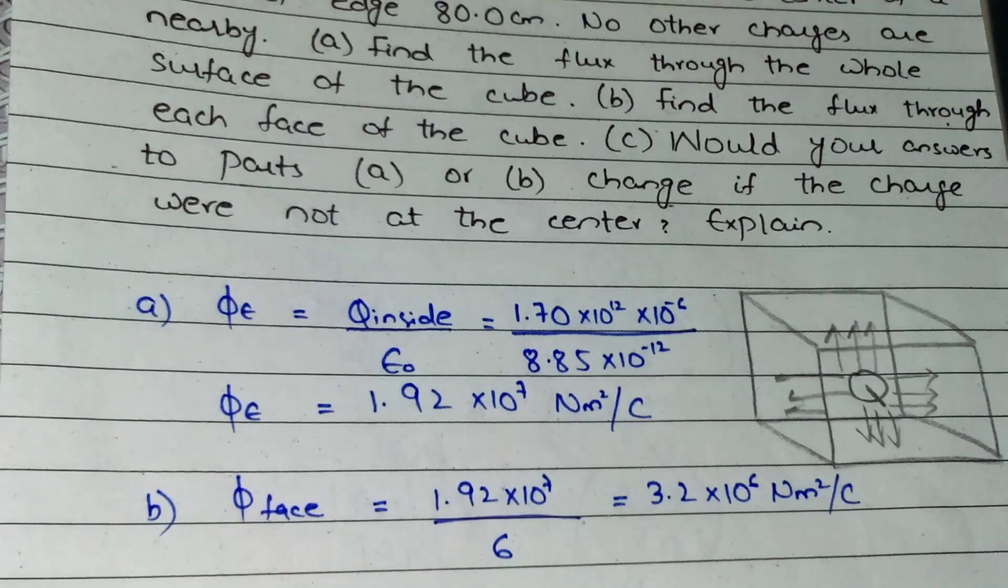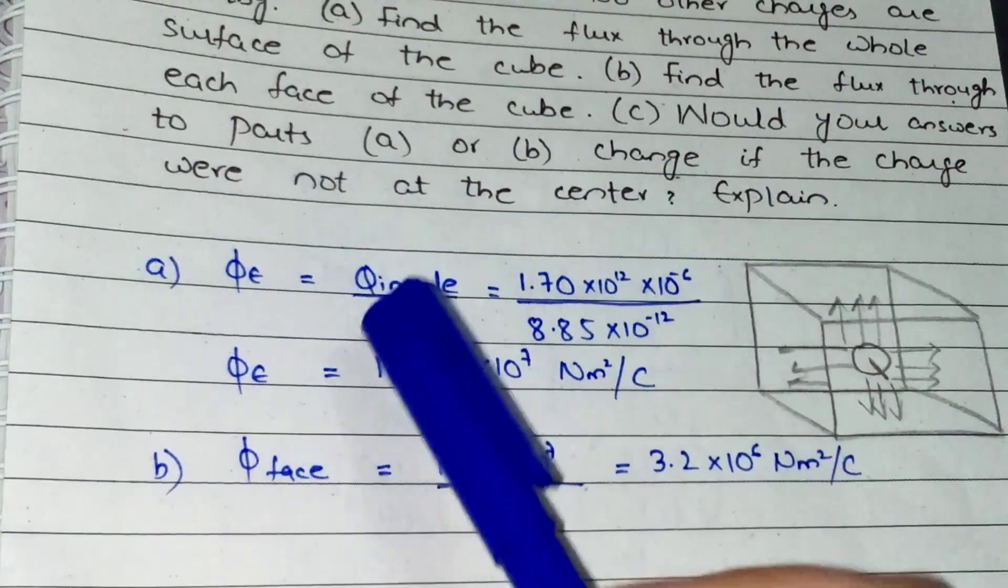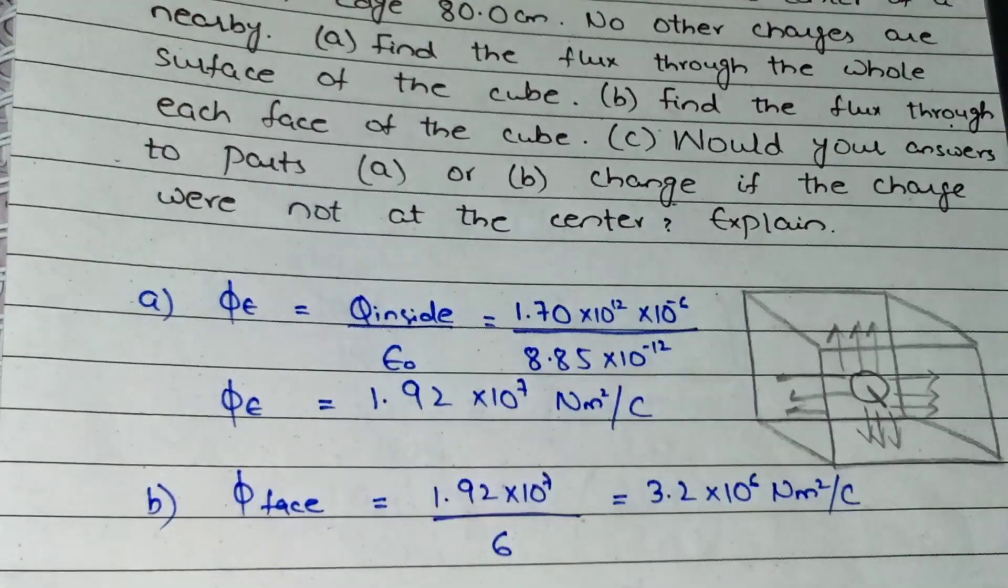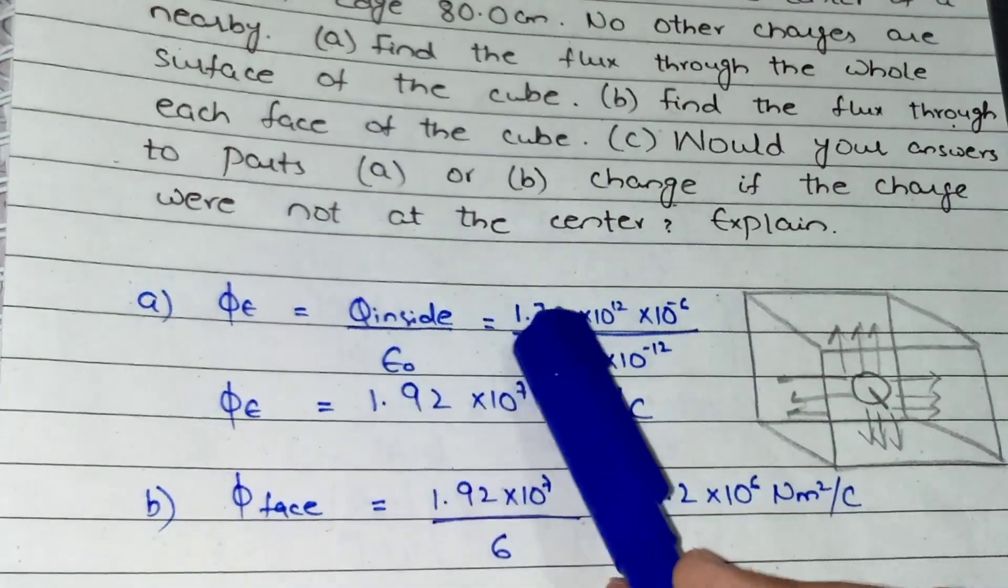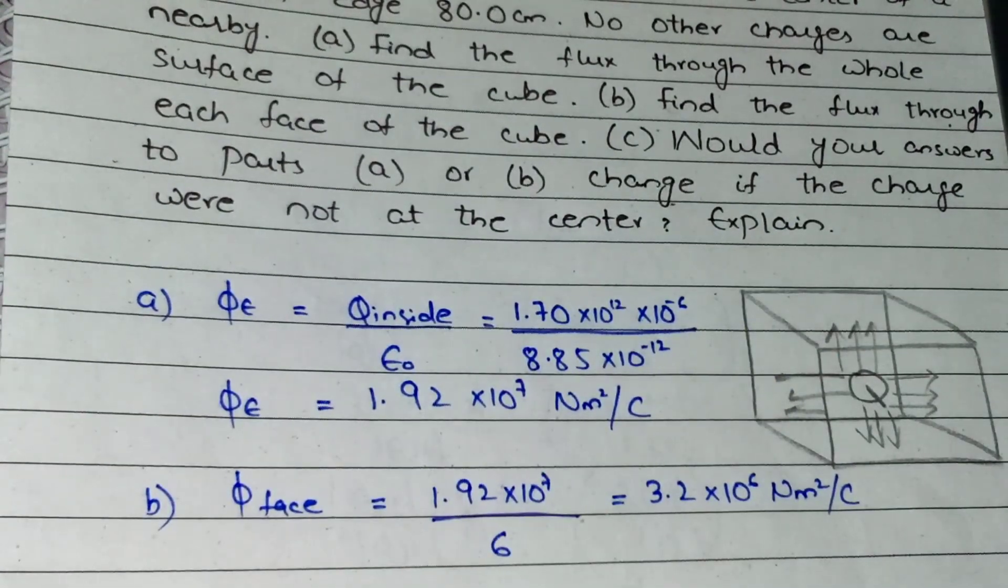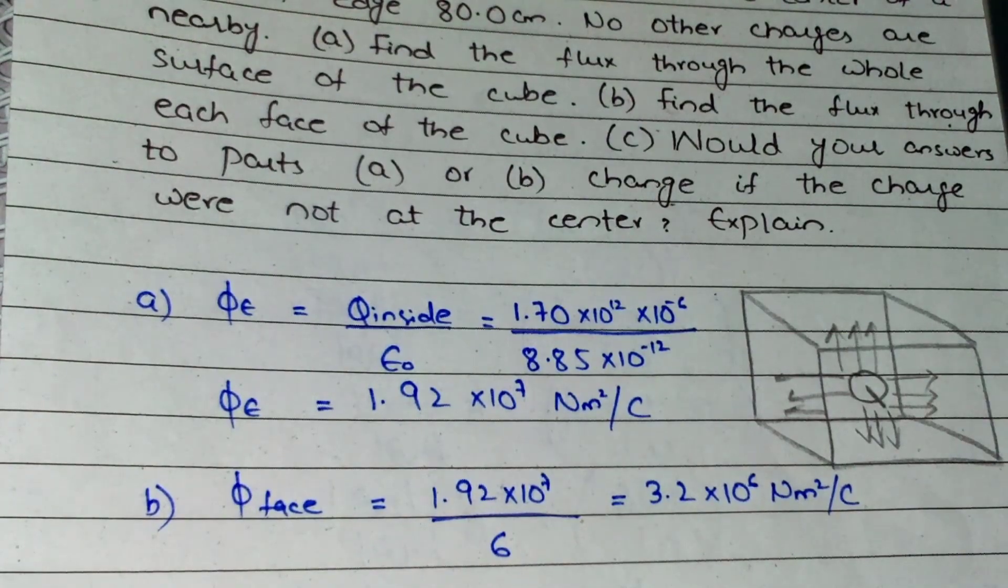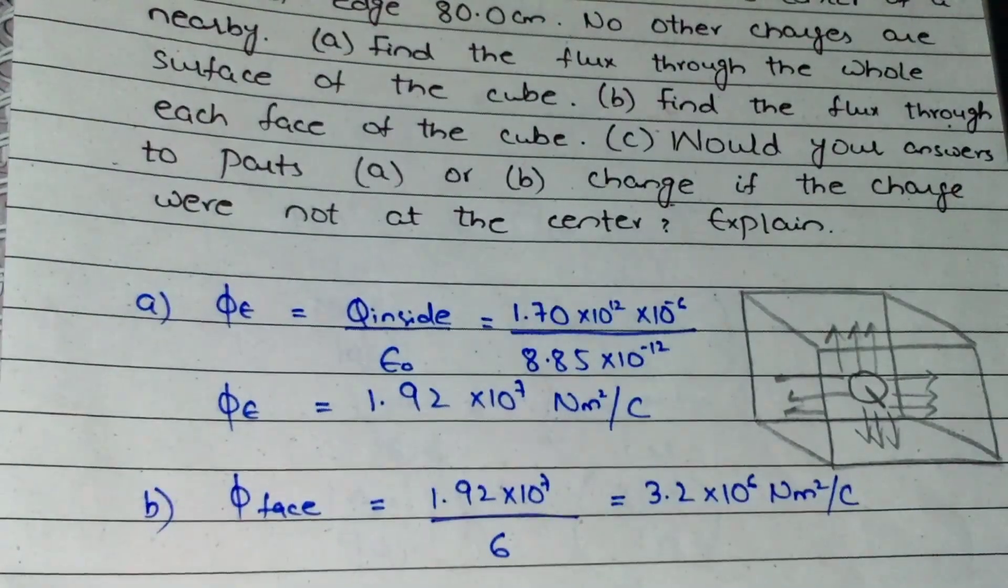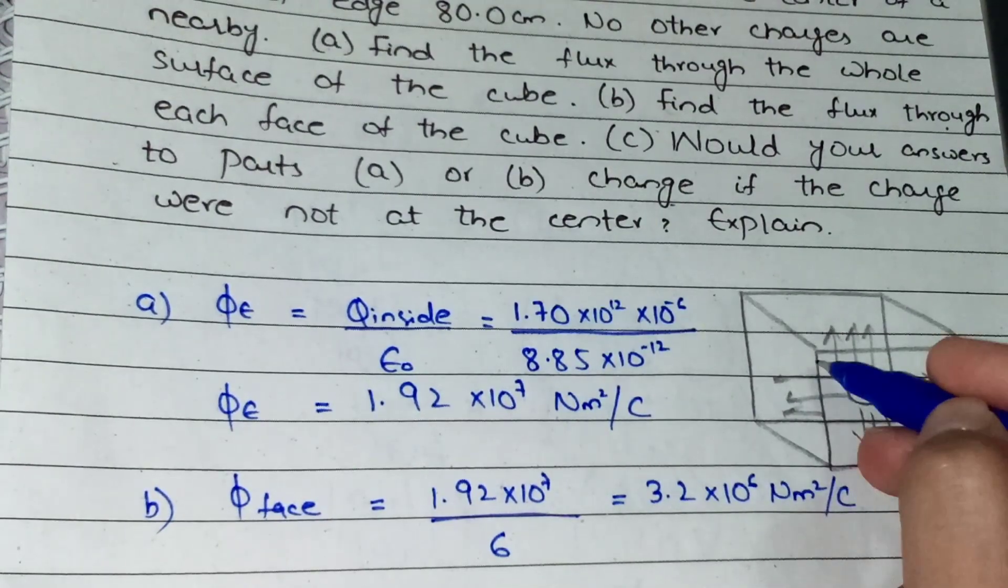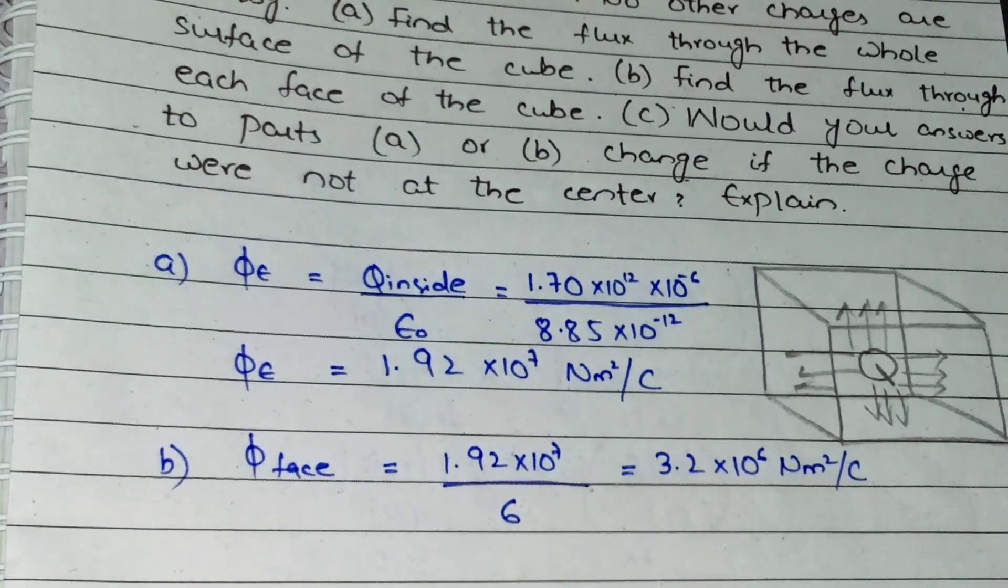For part C, you are asking would your answer to part A and part B change? For part A, the total flux inside depends only on the charge inside divided by epsilon. There is nothing to do with position or direction. So if the charge position changes, the answer for part A would not change.